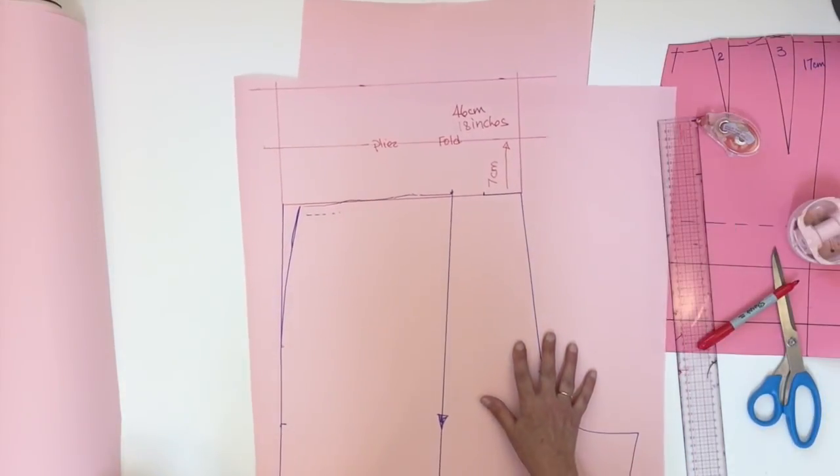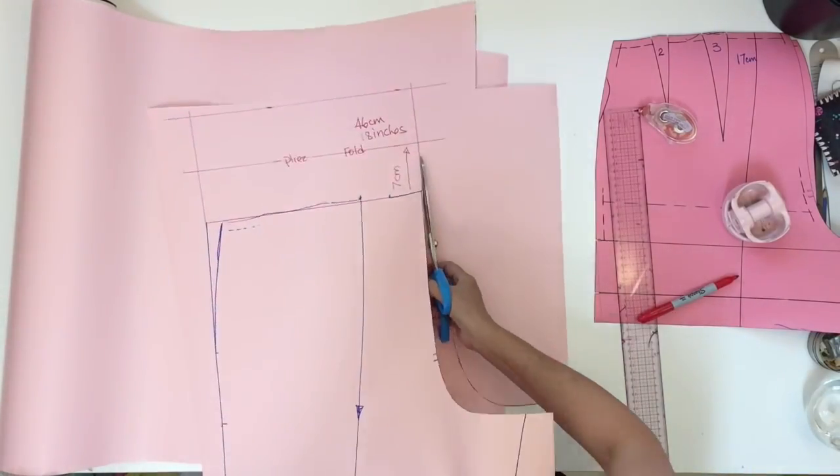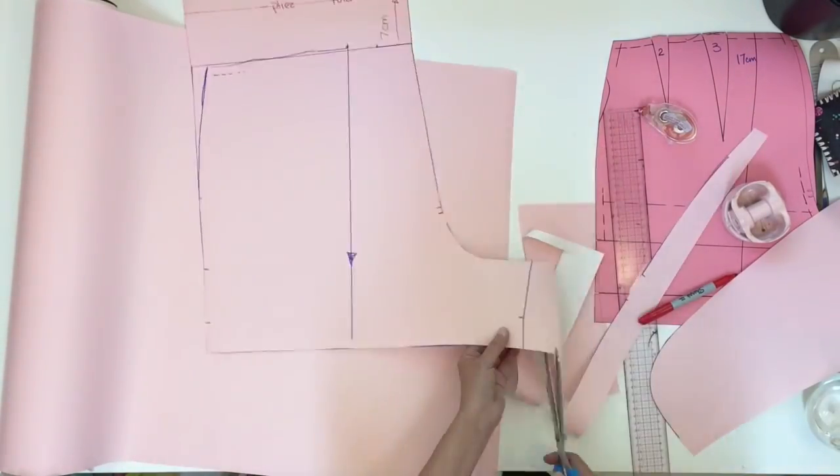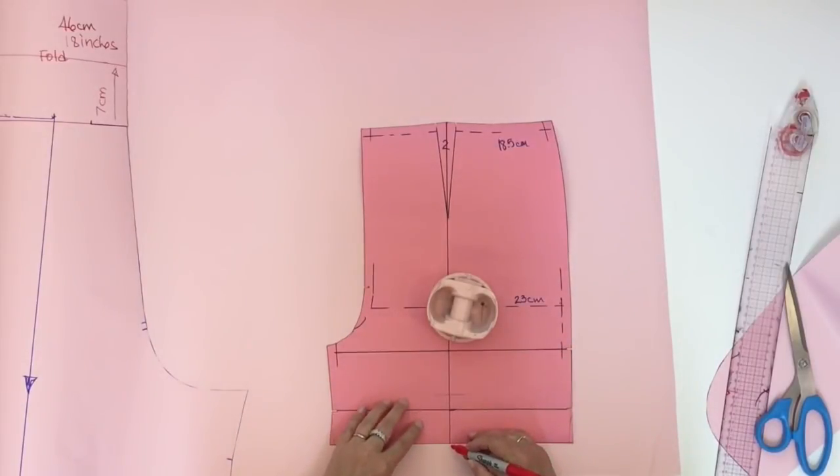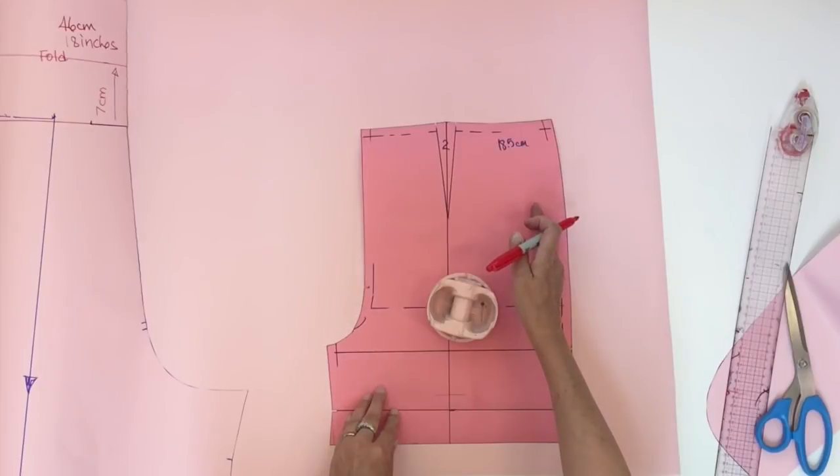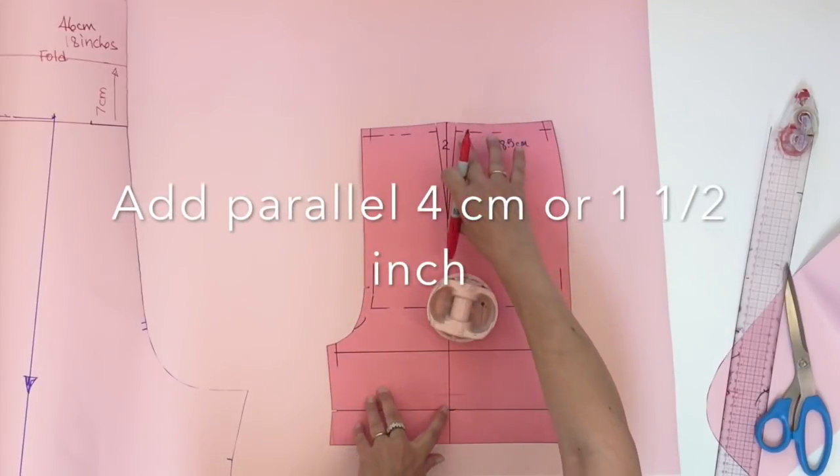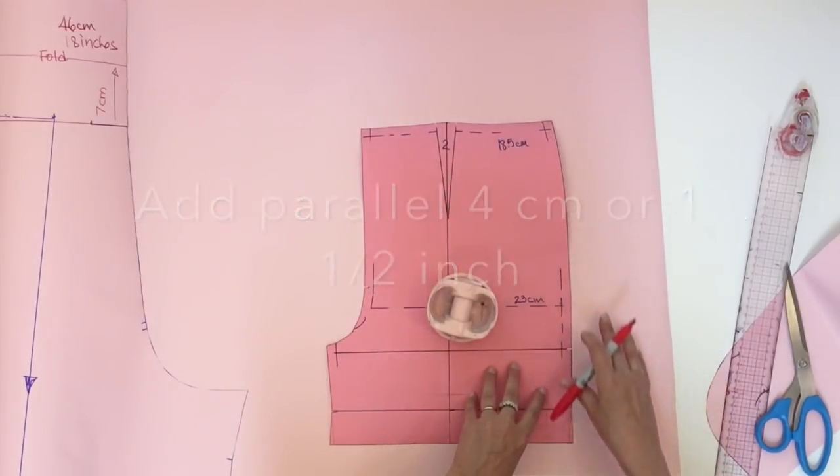So now the back pattern is finished. Now for the front we do exactly the same. So I trace the first part until the grain line. I'm going to open four centimeters top and bottom, move to trace the second part.